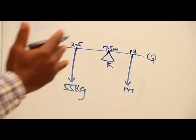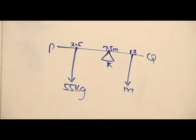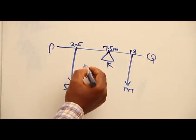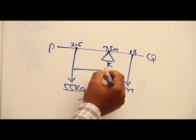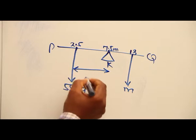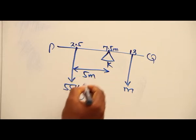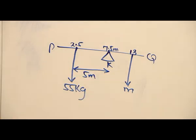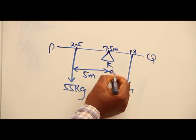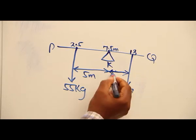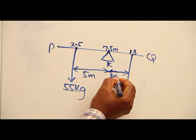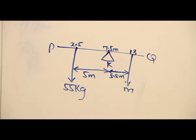So that it will be 2 meters from the end. The distances are as follows. From the 55 kilogram mass, the distance is 5 meters. And the distance from the pivot to where the new mass is going to be is 5.5 meters.